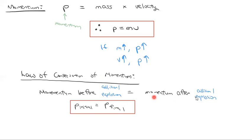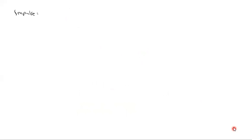You just need to work out what momentum is and then do questions, which can get relatively complicated. That's how you answer all collision and explosion questions. Now we also need to define a few other things — there's impulse. One definition of impulse is change in momentum. If impulse is defined as change in momentum, how do we represent that in symbols?